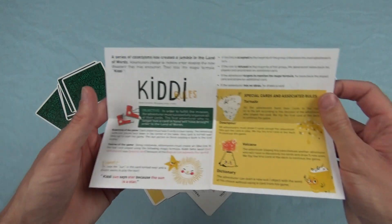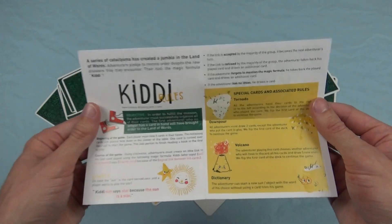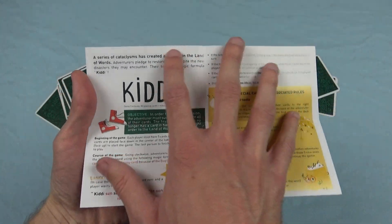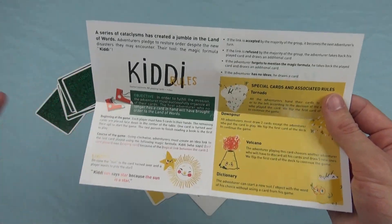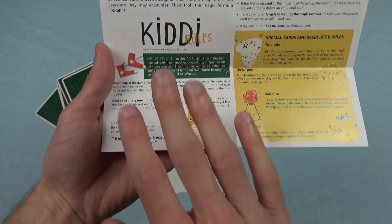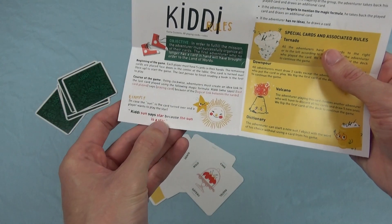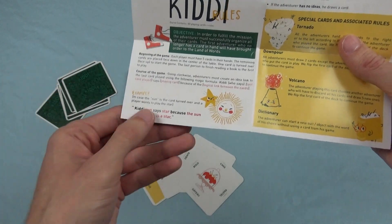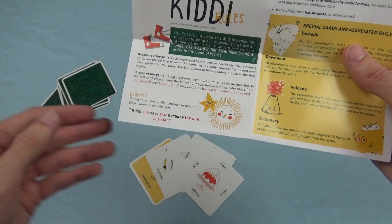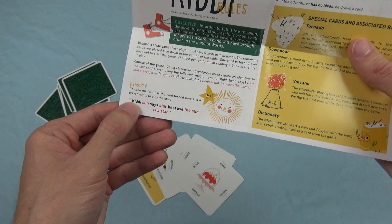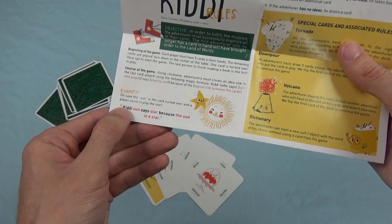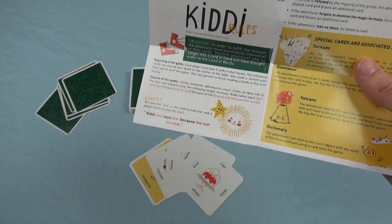For example, if we look at the rules here, we have an example at the bottom, which is the only rule, by the way. So, it's very simple, not too many rules. The example here, we have Kidsy sun says star because the sun is a star, and just so you know, Kidsy is not the proper way to spell it, but in French, it basically means like who says. So, who says sun says star, and so on.